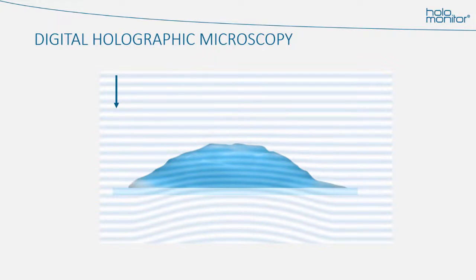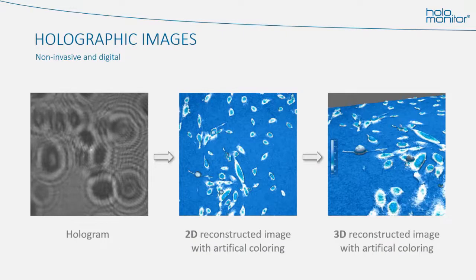As the light only passes through the cells, there is no energy transfer to the cells, and the light does not influence them in any way. It is a non-invasive method to image live cells. As only very low light intensity is needed, the cells are only exposed to 0.2 milliwatts per square centimeter. When the light has passed through the cells, it is mixed with a reference light, and a hologram is created.